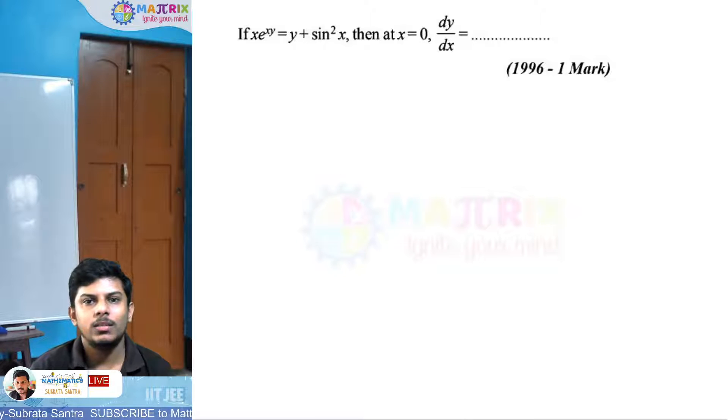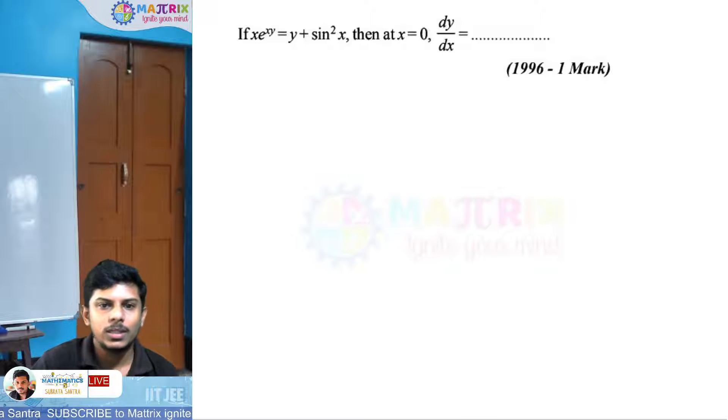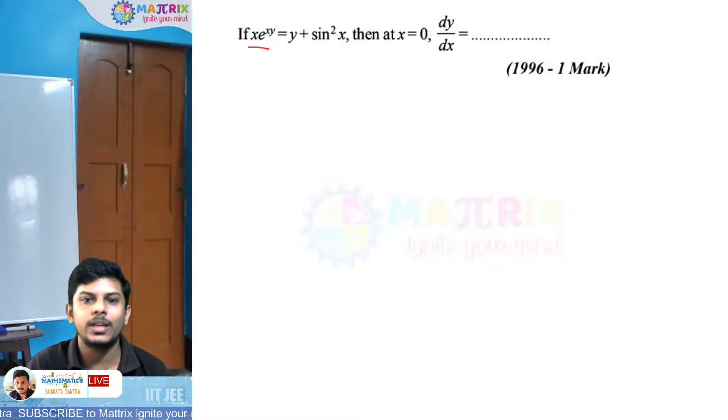Hello everyone, welcome back to my channel Matrix Ignite Your Mind. Today we'll solve a question from the 1996 exam. The question is: if x^y times e to the power xy equals y plus sin squared x, then at x equals 0, find dy/dx.